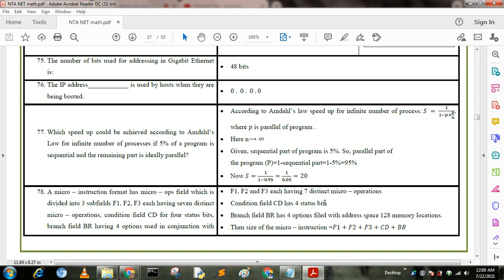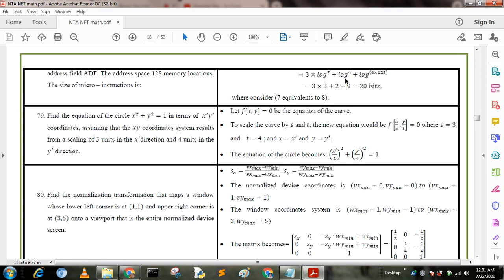The size of the micro-instructions F1, F2, F3, CD plus BR, we put this value log 7 plus log 7 plus log 7 plus log 4 plus log 128. The approximate value log 7 we consider as 3, that is 2 to the power 3, and log 4 is 2, log 128 is 7. So 3 plus 3 plus 3 plus 2 plus 7, we get 20 bits.